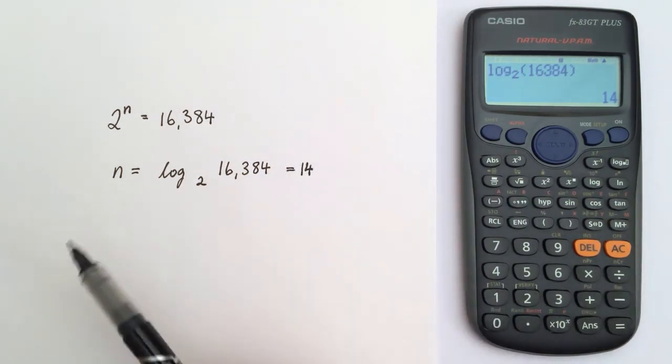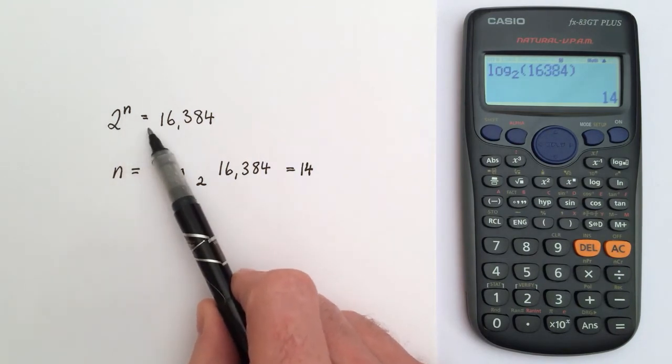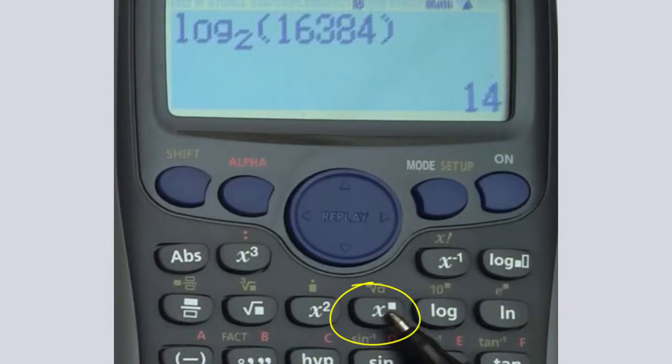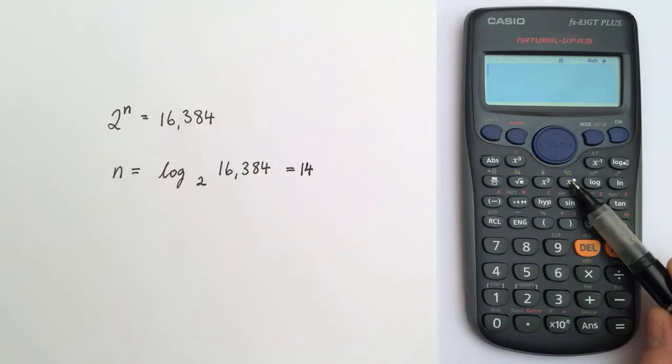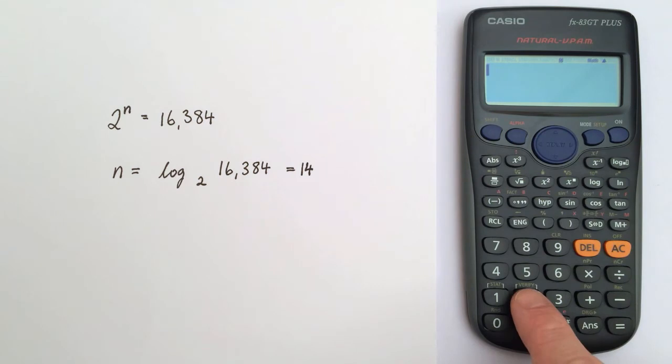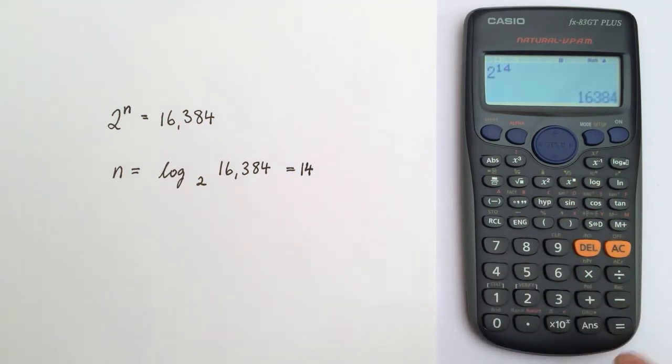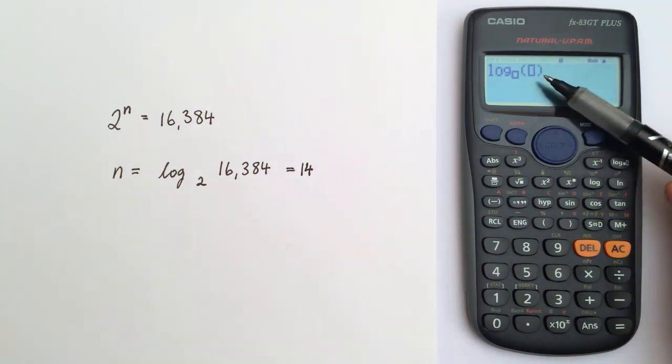I can use the calculator to check if this is true. Is it true that 2 to the power of 14 is 16,384? Well, there's this second button on the calculator which allows me to put any base to any power. So I've typed in 2 and to the power of 14 equals, and I see yes, it is true.